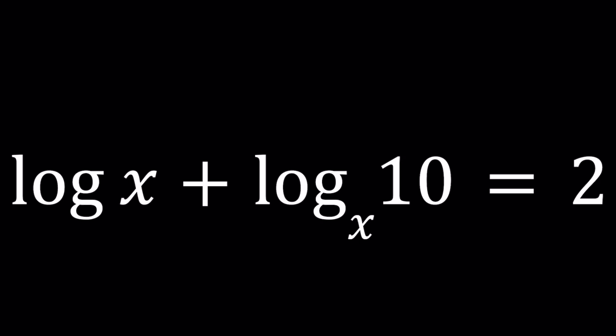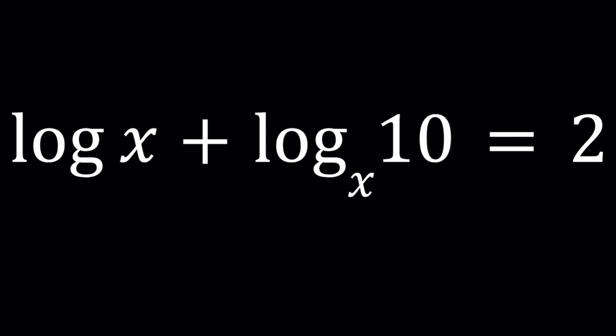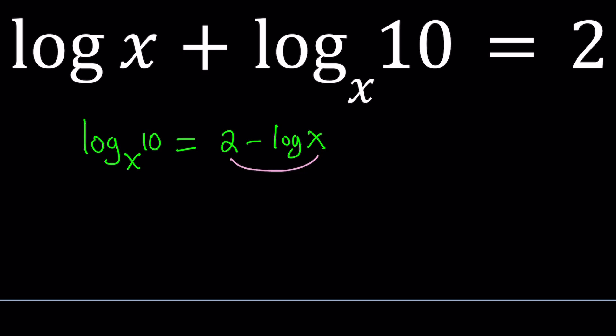When you see a problem like this, first thing I want you to notice is that the bases are different. So, here's my first attempt. I'm going to isolate this log 10 with base x and write it as 2 minus log x. My hope is that I can combine these two things into one, that's also called condensing, and then look at it from another perspective. Let's try to do it.